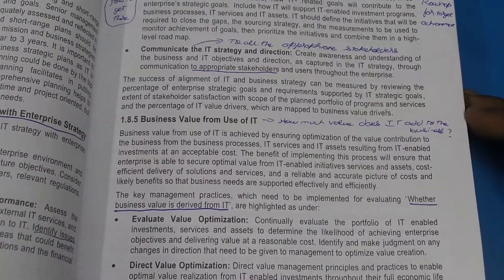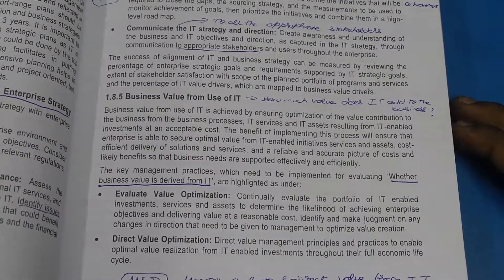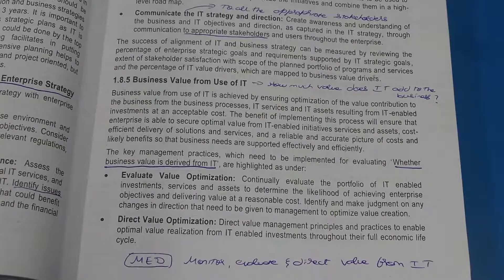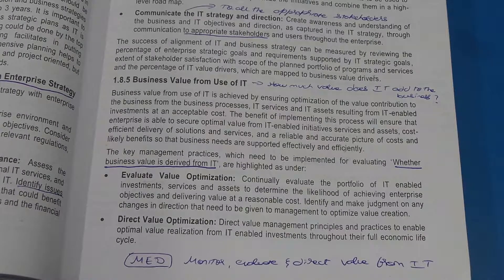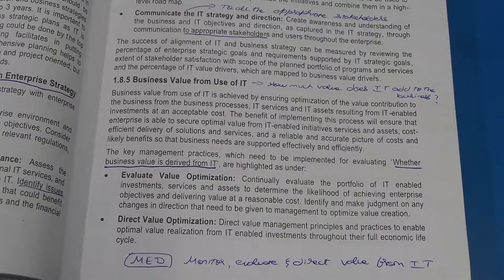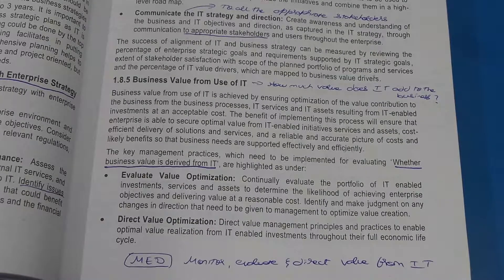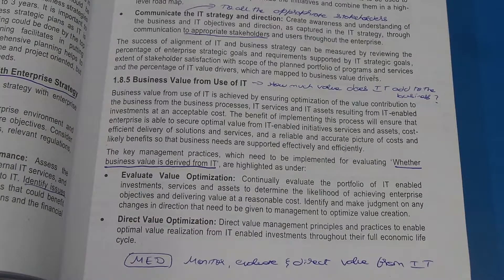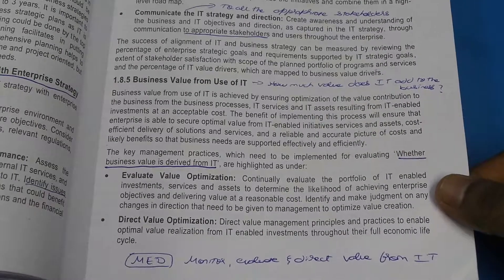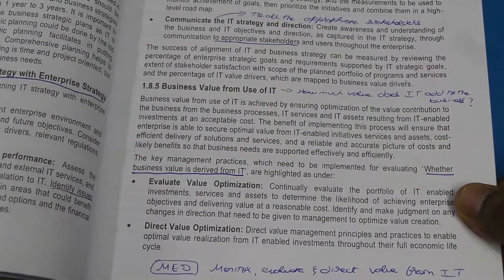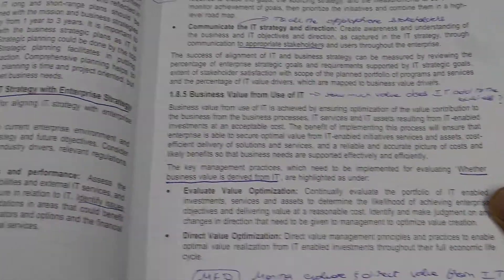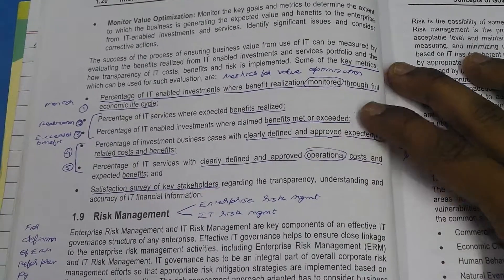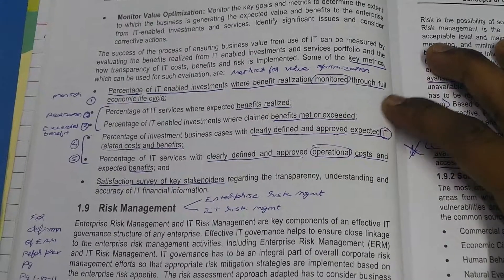The next topic is business value from the use of IT — what is the value of IT to the business, how the business gets any value add from IT, and how we monitor it. It uses the three points from governance practices: EDM — Evaluate, Direct, and Monitor. Evaluate value optimization is what is the existing status of IT and what value add it is giving now. Direct is to direct the optimization to reach the target.